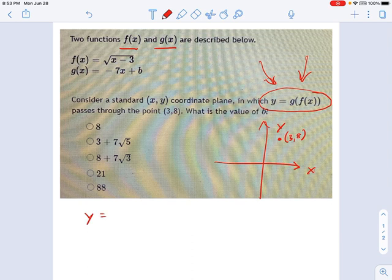So I'm going to say, y equals g of f of x. Okay? What is that thing? Well, f of x is right up here. That's square root of x minus 3. So this is g of square root of x minus 3.